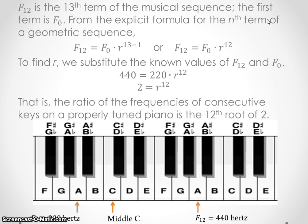From the explicit formula for the nth term of a geometric sequence, we know that F_12, for instance, is going to be your initial term, which is F_0, and then times, now 13 minus 1. Now, again, we got this 13 because technically 12 is the 13th term if we start counting at 0 because you have to start at 0, 1, 2, 3, 4, etc. So we can simplify this just a little bit right here, and we get F_12 equals F_0 times r to the 12th power.